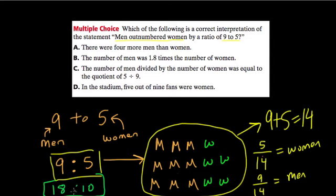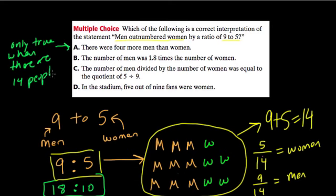And in fact, as you scale this up larger and larger, this statement A becomes less and less true. So this is only true when there are exactly 14 people in the room. This is only true when there are 14 people. So if there are more than 14 people, then this is an incorrect statement. So maybe that's not the best choice.